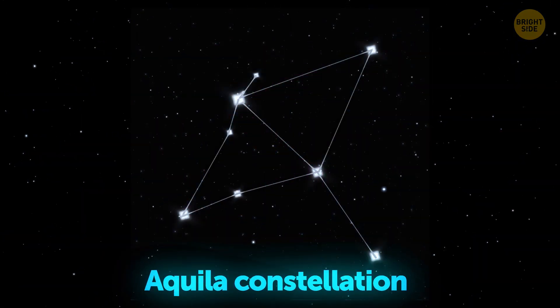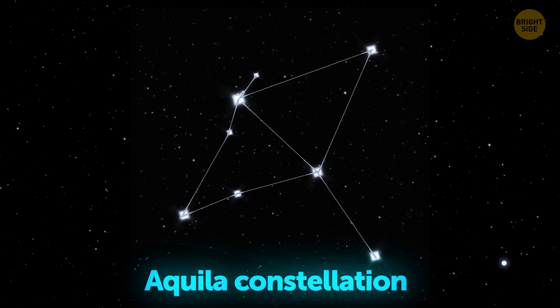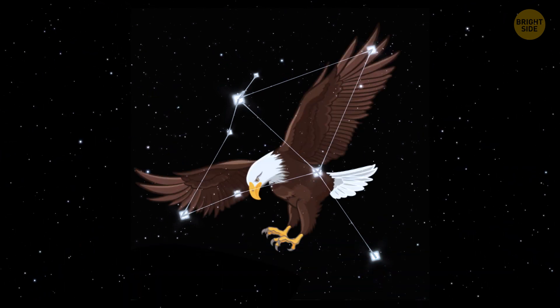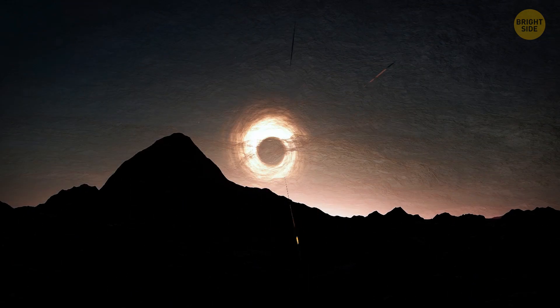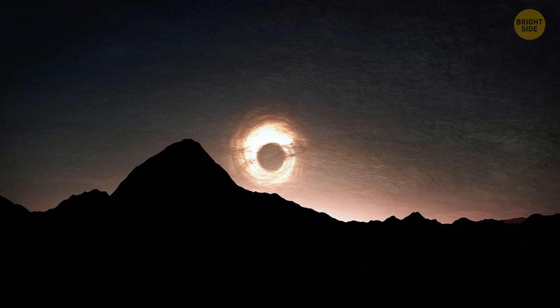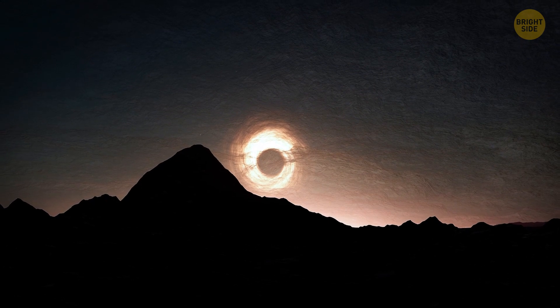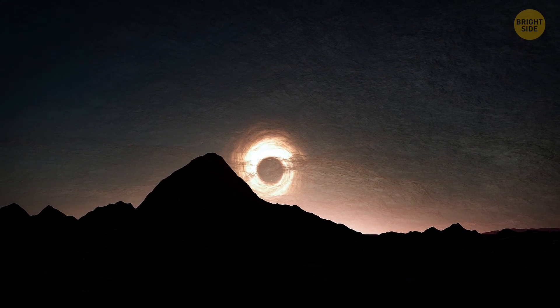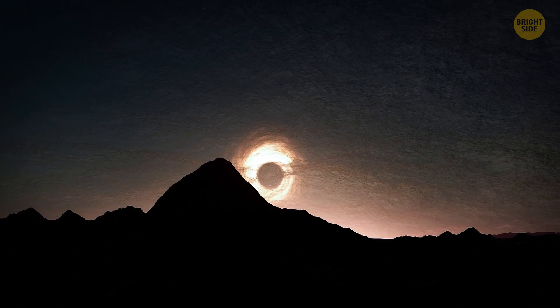Gaia BH3 is located in the Aquila constellation. From Earth, it seems to have the shape of an eagle. Interestingly, astronomers didn't expect to find a high-mass black hole lurking so relatively close to Earth and remaining undetected for so long.